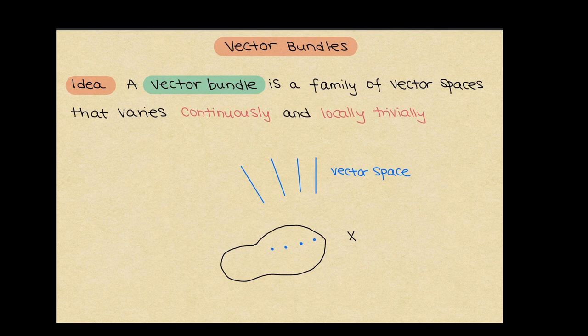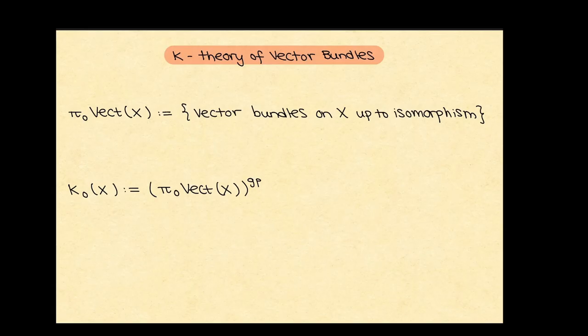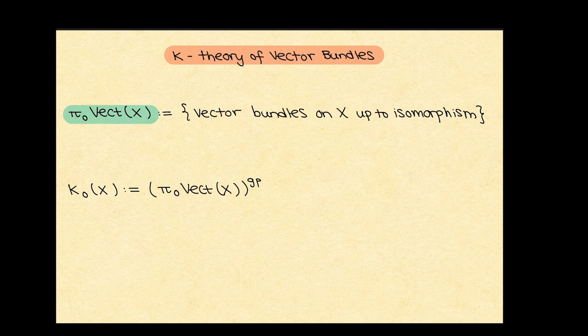Around some small neighborhood of a given point, it should just look like you're projecting vertically straight down. There are two important examples of vector bundles to keep in mind. First, there's the trivial bundle — you can always, over any space, have the constant family of vector spaces. A more interesting example is the Möbius strip sitting over the circle: if you go around the circle once, the blue line flips over itself. Given a geometric object X, there's an interesting monoid we can associate to X, which we call π₀Vect(X). As a set, it is the set of vector bundles on X up to isomorphism. Much like how we can add vector spaces by taking the direct sum, it also makes sense to take the direct sum fiber-wise of vector bundles, and this operation makes π₀Vect(X) into a monoid.